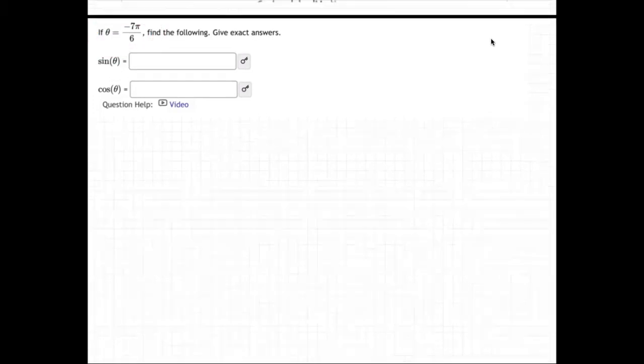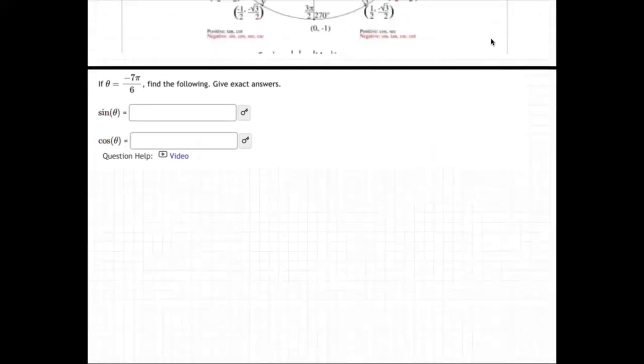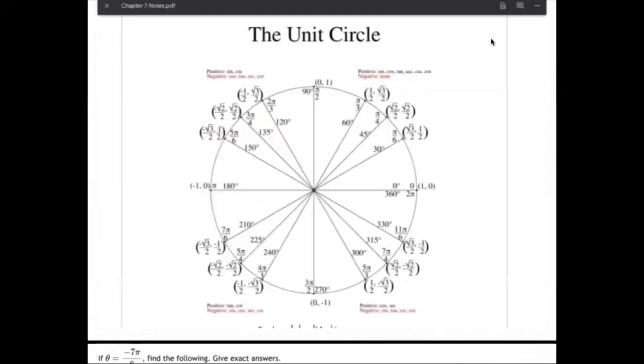Okay, on this question, they're giving us the angle theta is negative 7π over 6, and they're asking us to find the sine and the cosine of that angle. So I'm going to bring us up to the unit circle here. Again, our angle is negative 7π over 6.